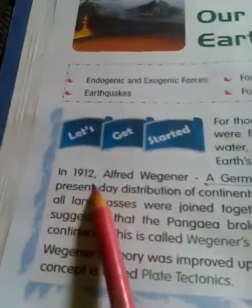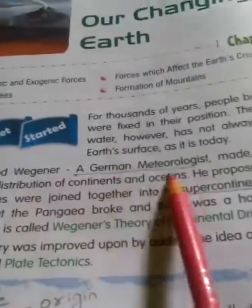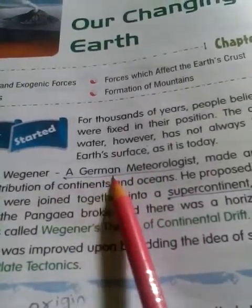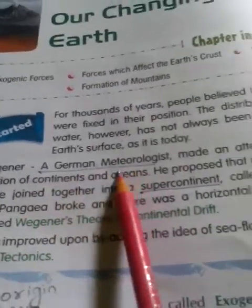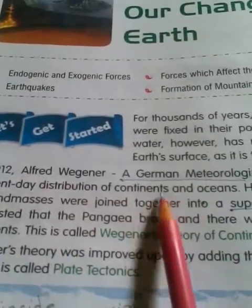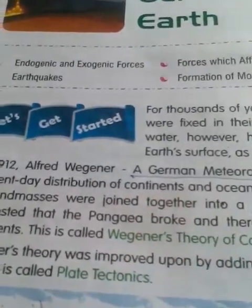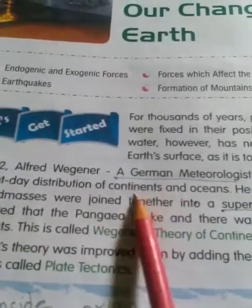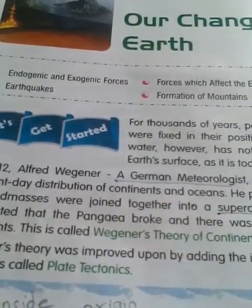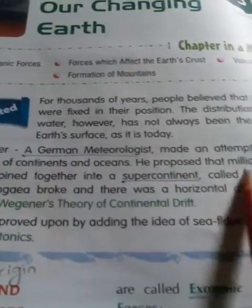In 1912, Alfred Wegener, a German meteorologist, proposed that the continents had not always been in their current positions. He studied animals and fossils which were found across different continents, leading him to propose his theory about continental movement.